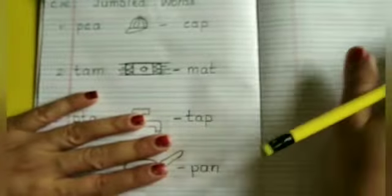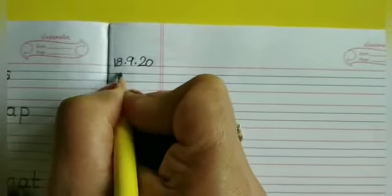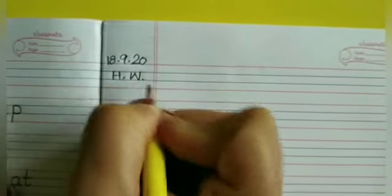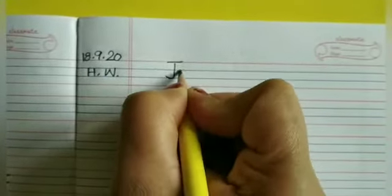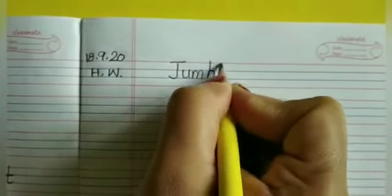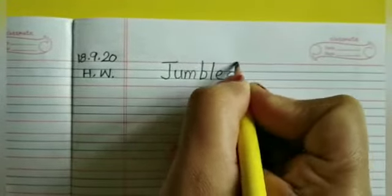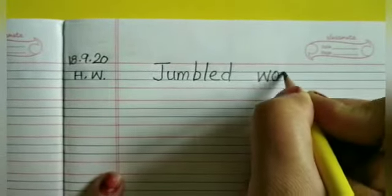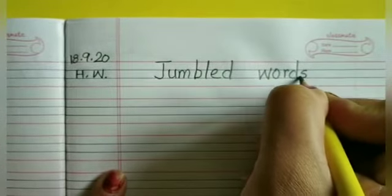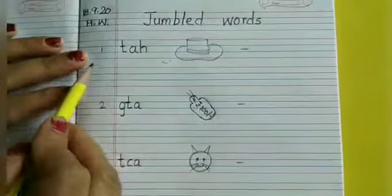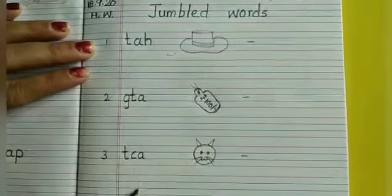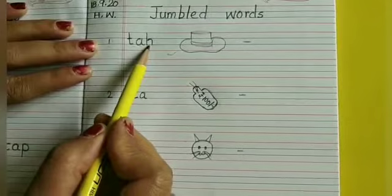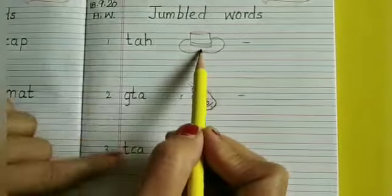Now we will write in the homework. Again first write down the date. 18.9.20 then H.W. again heading jumbled words capital J. U, M, B, L, E, D. Then one finger gap. Then write W, O, R, D, S. Now see I have written all the jumbled words. First write this jumbled word and next to it, just leave one finger gap and draw.